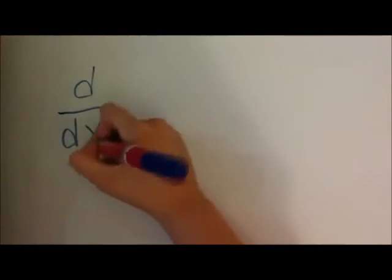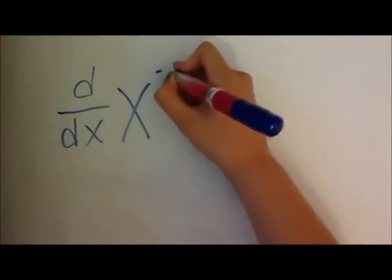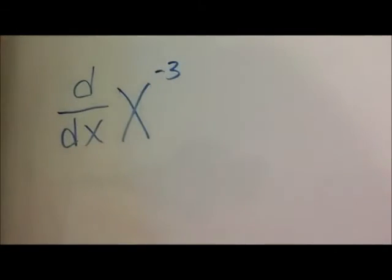So for our second example, we're going to be finding the derivative of x to the power of negative 3. Well, luckily the power rule also applies to negative exponents, so we're just going to do it the same way.